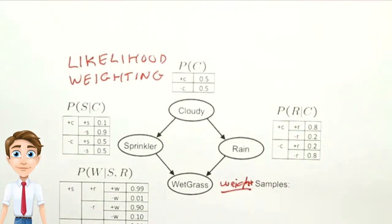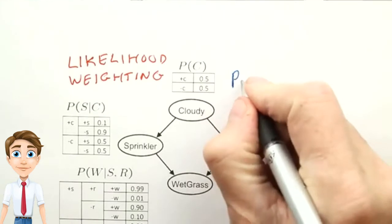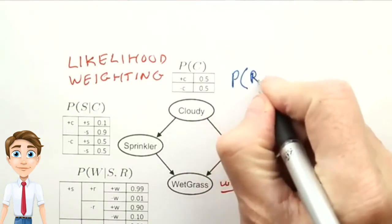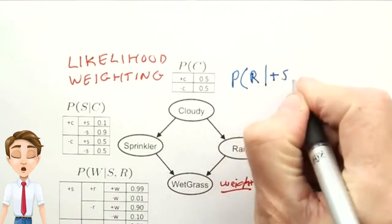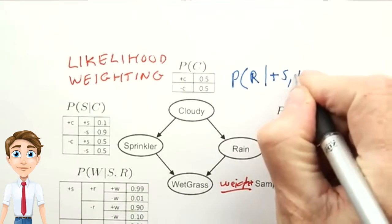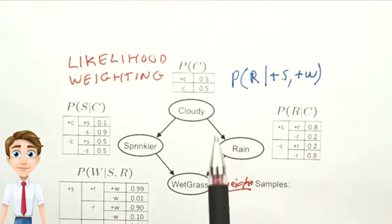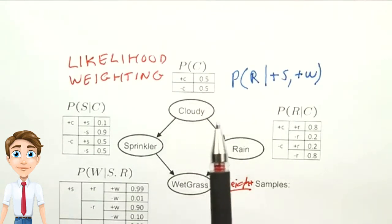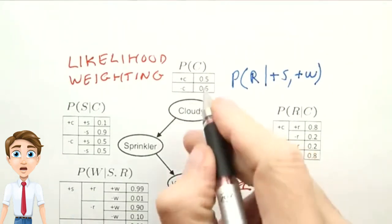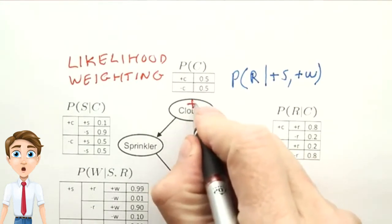Now, let's say we want to compute the probability of rain, given that the sprinklers are on and the grass is wet. We start as before, we make a choice for cloudy, and let's say that again we choose cloudy being positive.